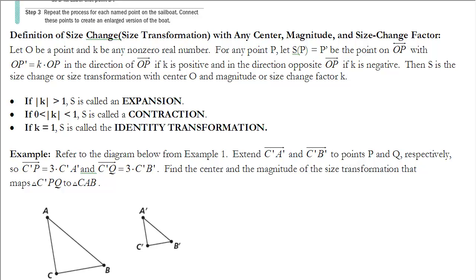Now let's take a look at a new definition of size change. This time instead of looking at a coordinate axis, let's look at it using any center point, any magnitude, any size change factor. The definition says: let O be a point and k be a non-zero real number. For any point P, let S of P equal P prime be the point on line OP with OP prime equal to k times OP — in the direction of ray OP if k is positive, in the direction of the opposite ray if k is negative. Then S is a size change or size transformation with center O and magnitude or size change factor k.